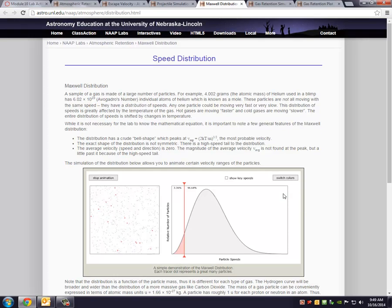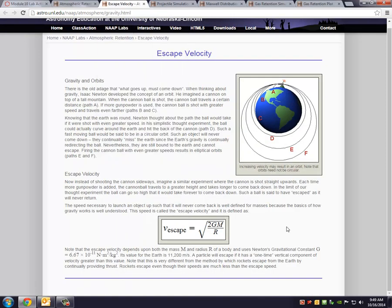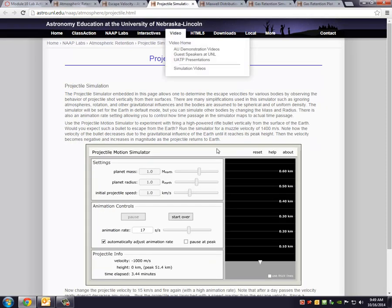So this kind of gives you a run-through of the background material. Again, make sure you read these, make sure you play around with these little distributions. Some of them you'll be using the background, the escape velocity page for number one on your lab quiz. You'll be using the background page two about the projectile simulation for number two on your lab quiz.